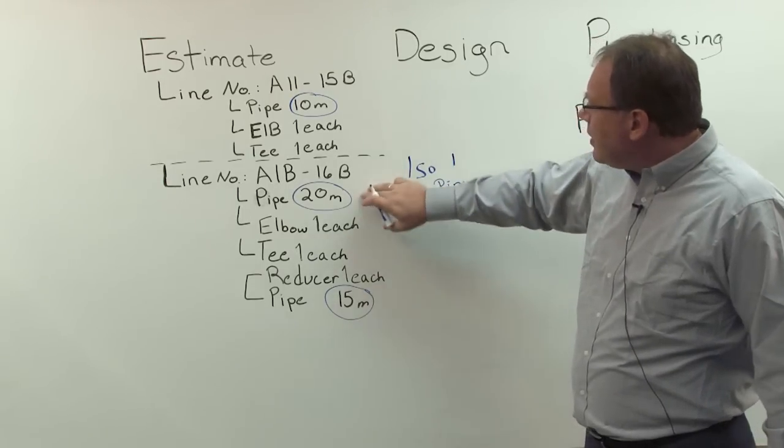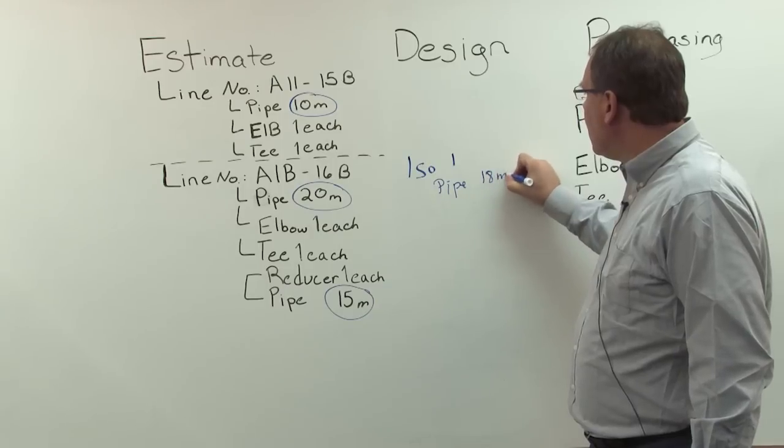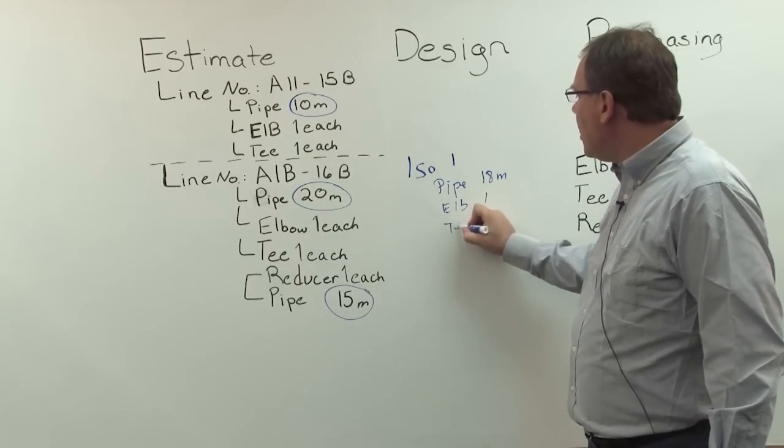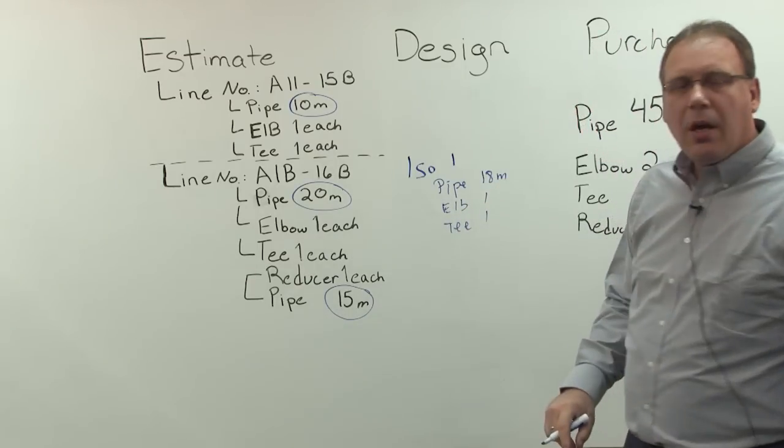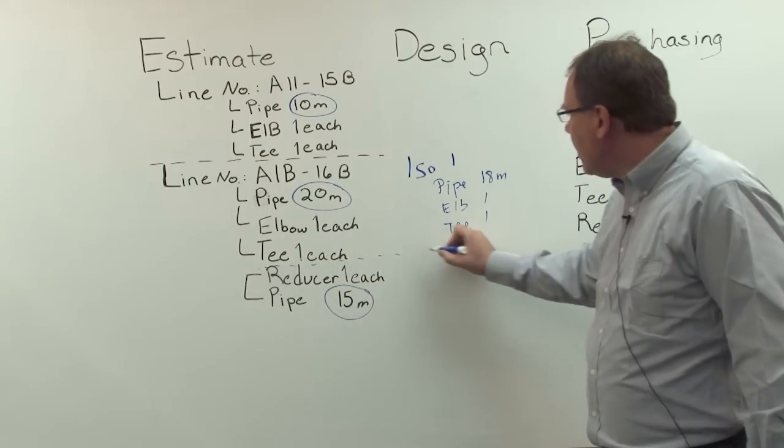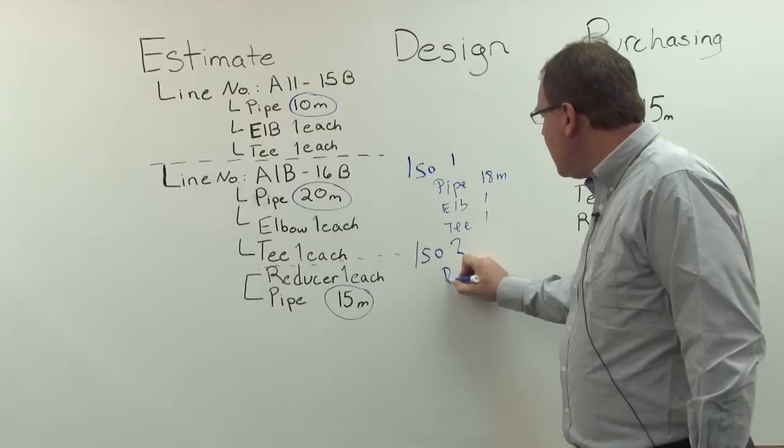Actually now instead of 20 meters, we need now 18. We still need an elbow, we still need a T. Okay? Now second isometric, so basically here, will be cut. Second isometric...